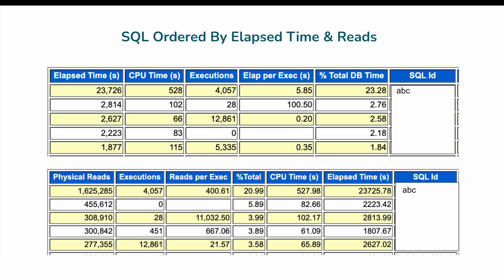If SQLID ABC is already running with the best execution plan and no further tuning is possible, and if the number of executions cannot be reduced, another solution is to increase the network bandwidth so IO requests can be processed much faster. For example, if bandwidth is currently 1 GB/s, increasing it to 10 GB/s would allow even 400 reads per execution to be processed much faster.